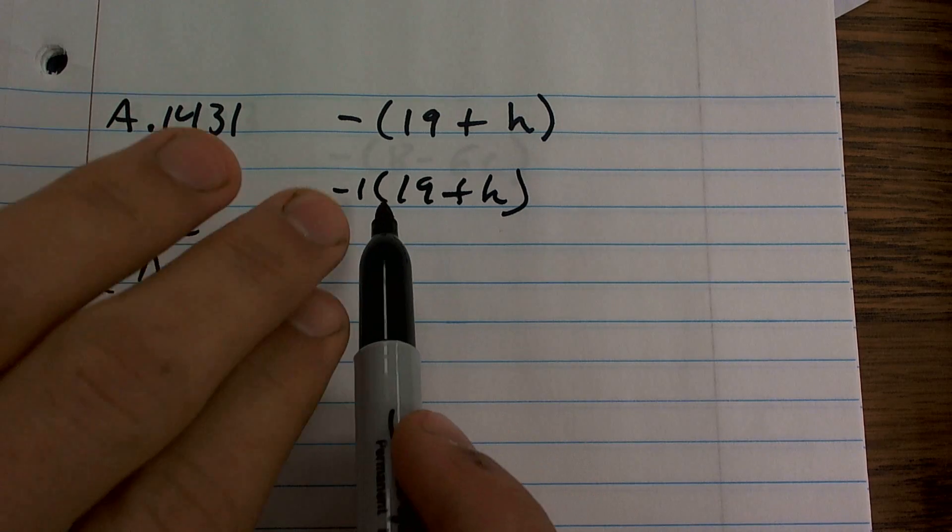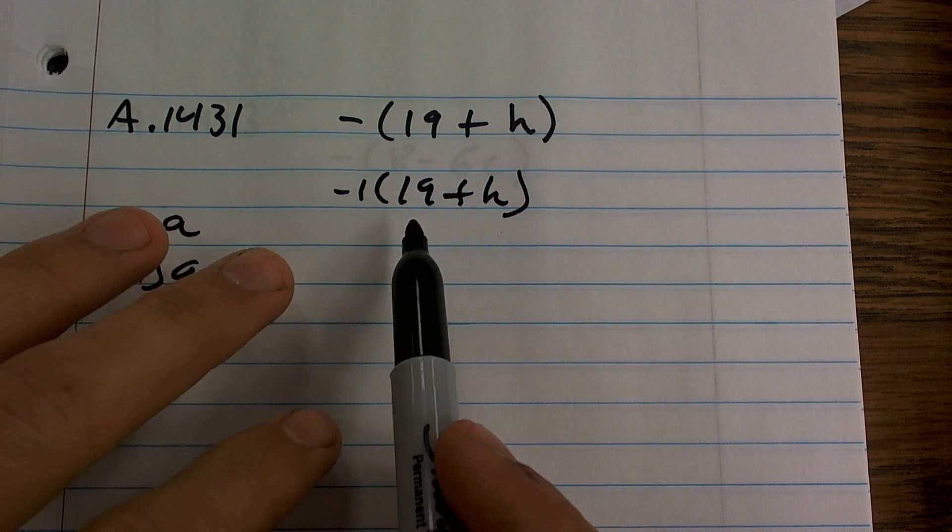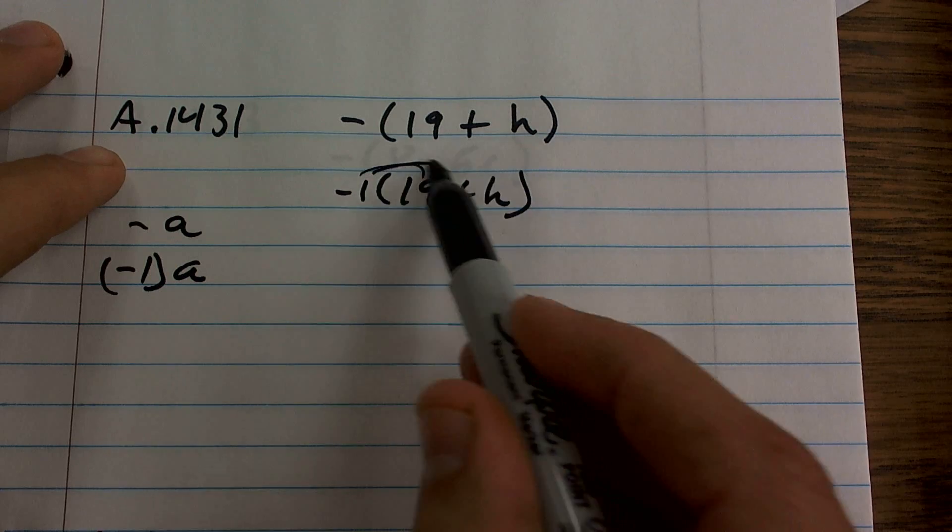you can see that negative 1 is just another number. So I'm just going to apply my distributive property.